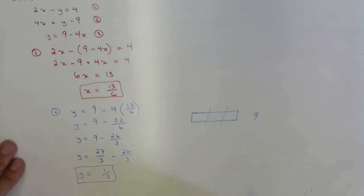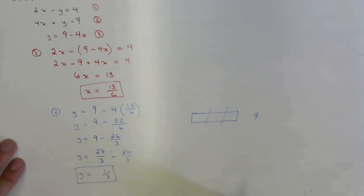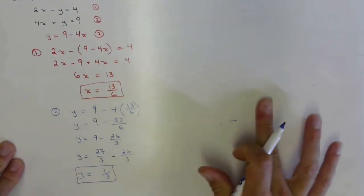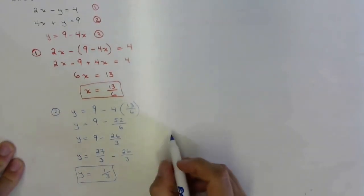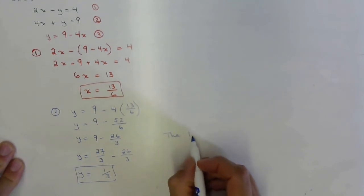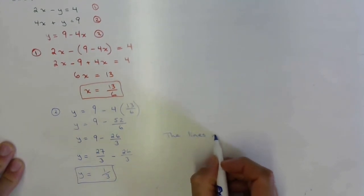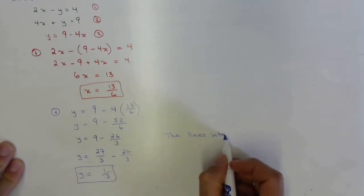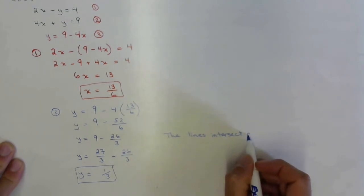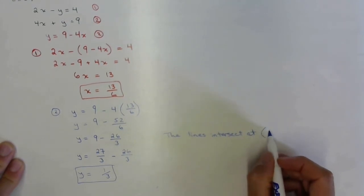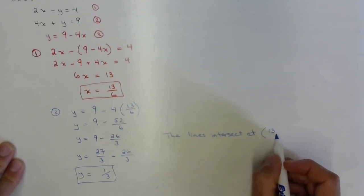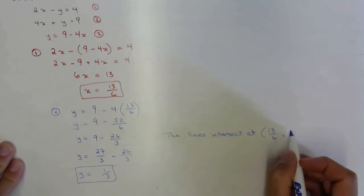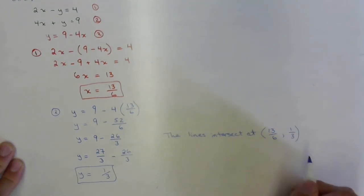So the answer is the lines intersect at (13/6, 1/3).